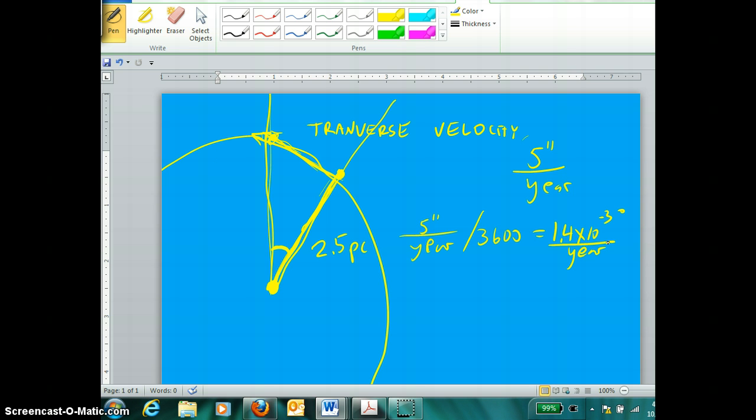Now that we have that, we can use our proportion. The star moves 1.4 times 10 to the negative third degrees, and that is to 360 degrees. That motion is to this motion as the baseline, which is what we're trying to find, this transverse velocity, is to 2 pi times 2.5 parsecs as the radius. The entire circumference is 2 pi times 2.5 parsecs. If we solve for baseline, we'll be solving for this little chunk of this entire length.